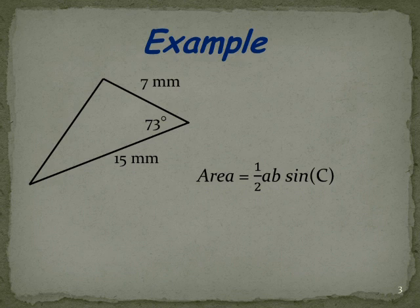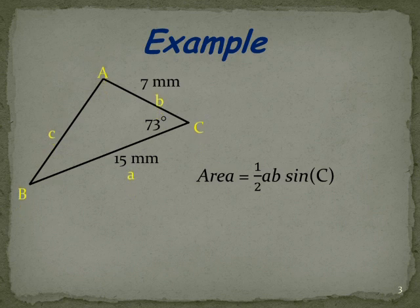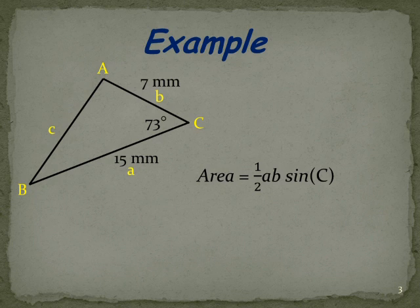So our formula is the area is a half AB sin C. Let's label the diagram so that it reflects the way we want to use it in the formula. So there we have it, C is the angle and the A and B are the other two sides. It doesn't matter which one is which, they're pretty well interchangeable. It's the C that's important. It has to be between the A and the B.